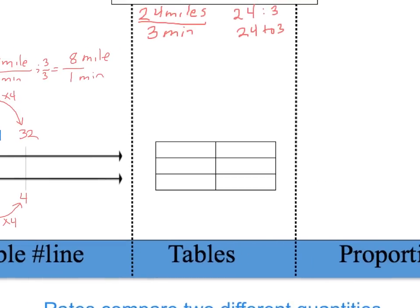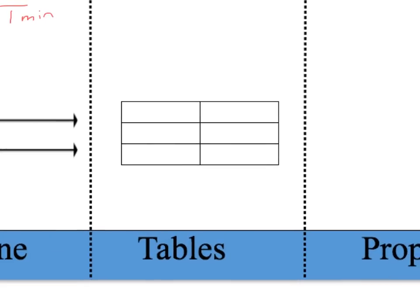We can also use a table to solve these problems. Using that same problem, I'm going to label the first column as miles and the second column as minutes. I know that my unit rate was eight miles per one minute, and if I scale up, I can multiply by three and get another rate — 24 miles per three minutes.